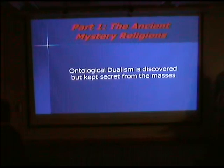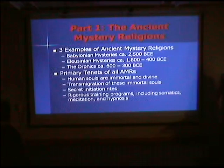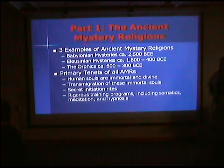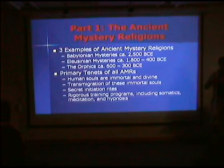Part one: the ancient mystery religions. Ontological dualism is discovered, but it's kept secret and used as a method of control. Our three examples of the ancient mystery religions: the Babylonian mysteries, starting around 2500 BCE; the Eleusinian mysteries, roughly 1800 BCE to 400 BCE; and the Orphics, 600 to 300 BCE. They sort of overlap one another, and there is common ground among all of them — they're all being practiced by the same kinds of people.